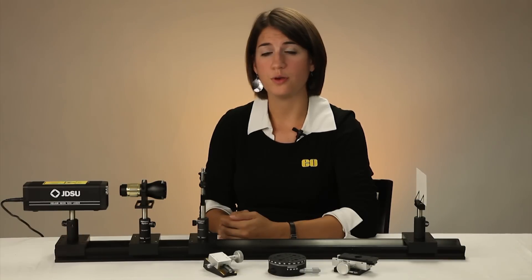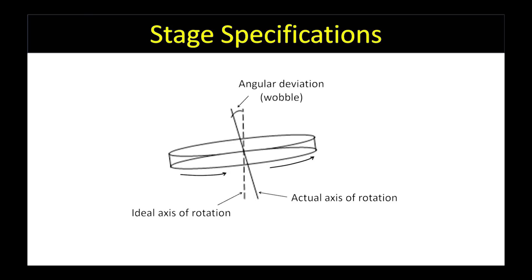The accuracy of a stage depends highly on the method used to measure it as well as environmental factors. Repeatability is defined as how often a stage returns to the same position with repeated attempts. Note that high repeatability does not imply high accuracy. Wobble is specified for rotation stages and refers to the amount of angular deviation of the rotation axis during one revolution of the stage.